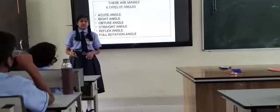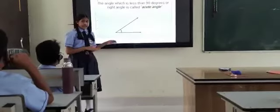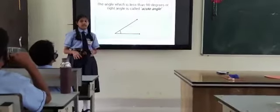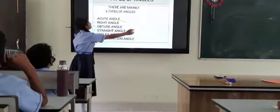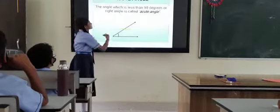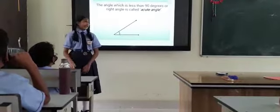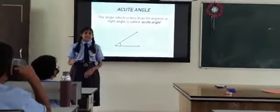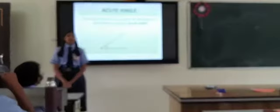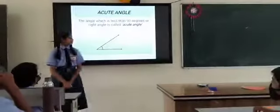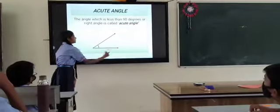First we will see individually what are acute angle, obtuse angle and all. So first let's see what is acute angle. The angle which is less than 90 degrees is called an acute angle. As you can see here is also an acute angle.